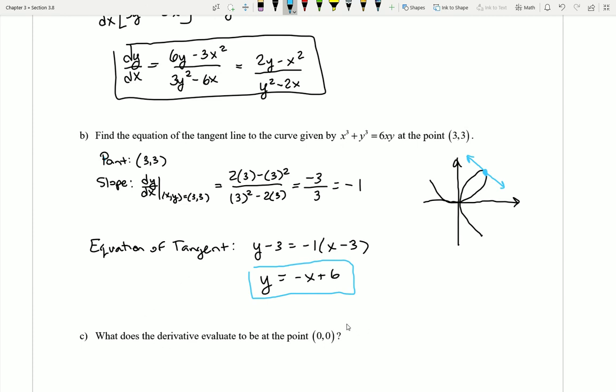Well, I have one final question here that's really important to note. What does the derivative actually evaluate to be at the point (0,0)? You'll notice here that the point (0,0) is actually a point on the curve. And so maybe I want to find the tangent line slope there.